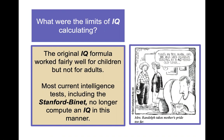The original IQ formula worked fairly well for children but not for adults, because the difference in knowledge between a 40- and 30-year-old is not the same as the difference between a 10- and 5-year-old. Most current tests, including the Stanford-Binet, no longer compute IQ in that original way. For example, saying someone is 39 but reads at a 42-year-old level doesn't make much practical sense.